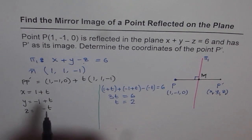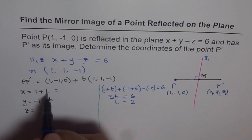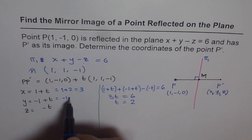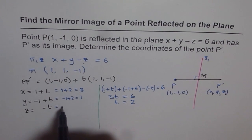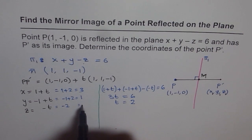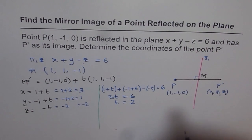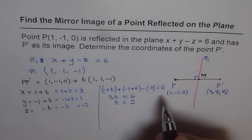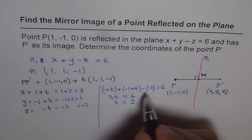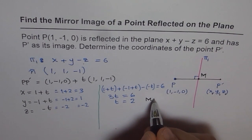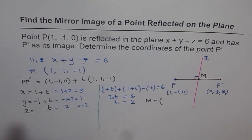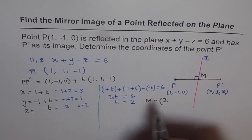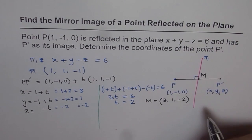With t equals 2, we can find the intersection point M: x is 1 plus 2 equals 3, y is minus 1 plus 2 equals 1, and z is minus 2. So the midpoint M is (3, 1, -2).